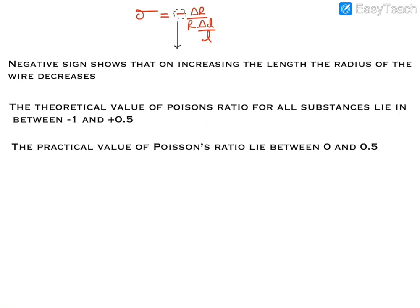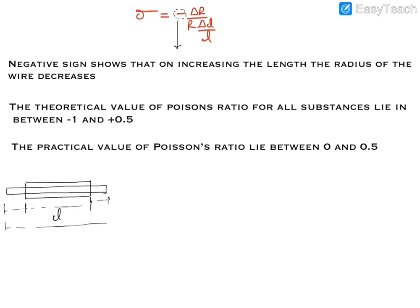The theoretical value of Poisson's ratio for all substances lies in the range of −1 to 0.5, but the practical value lies in the range of 0 to 0.5. If a material's length increases when stretched and its cross-section radius decreases, then ΔL is positive and ΔR is negative.